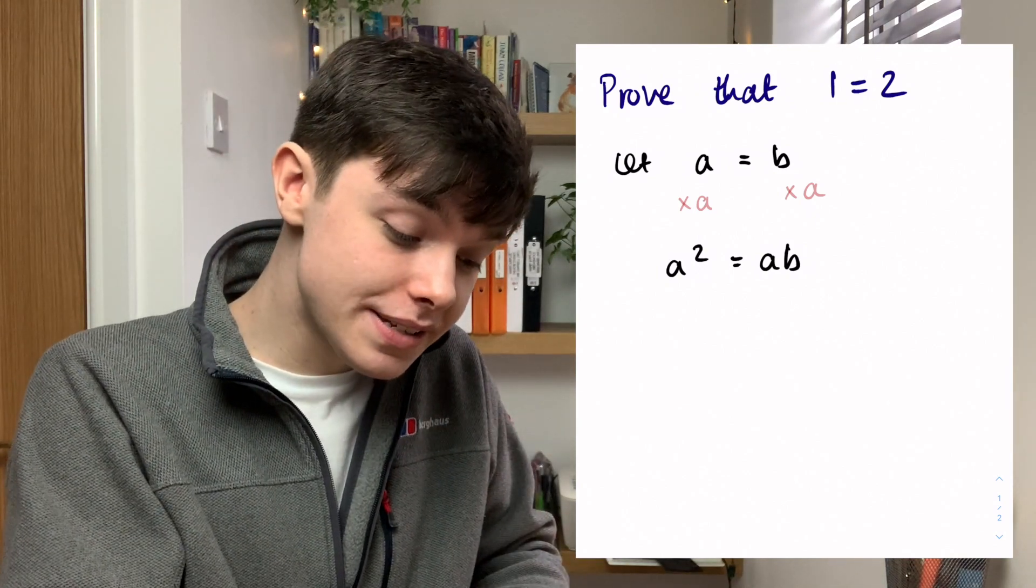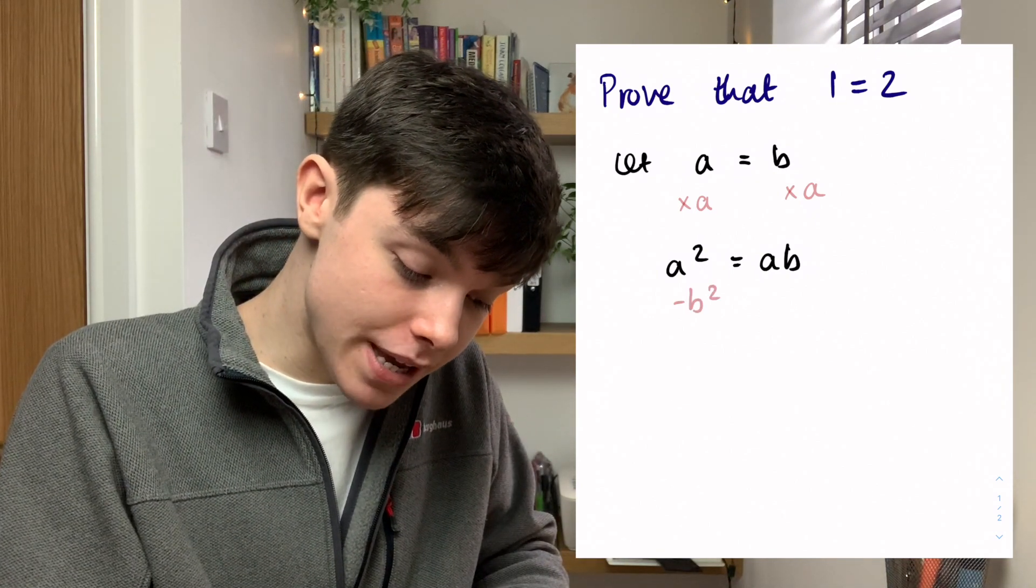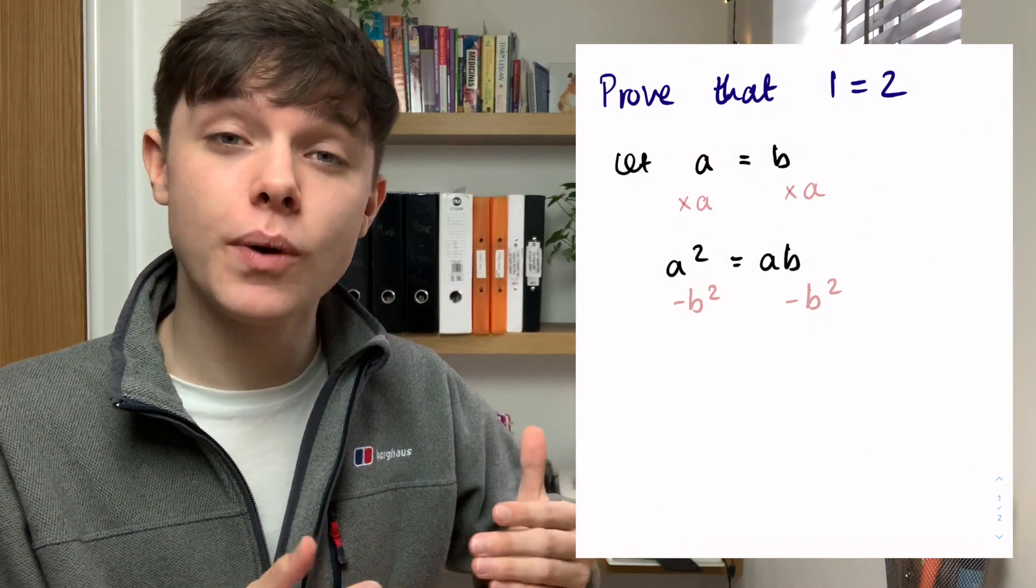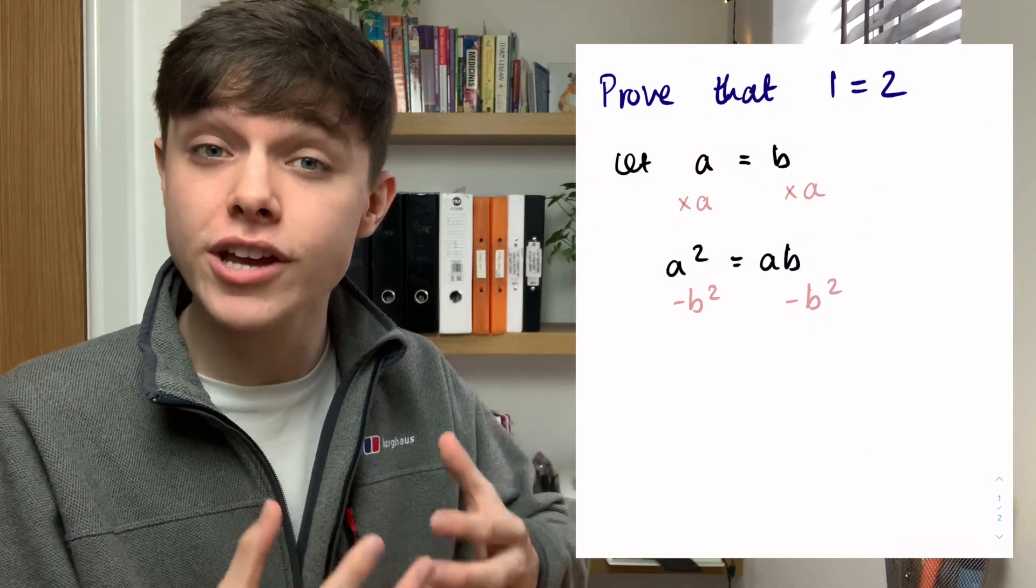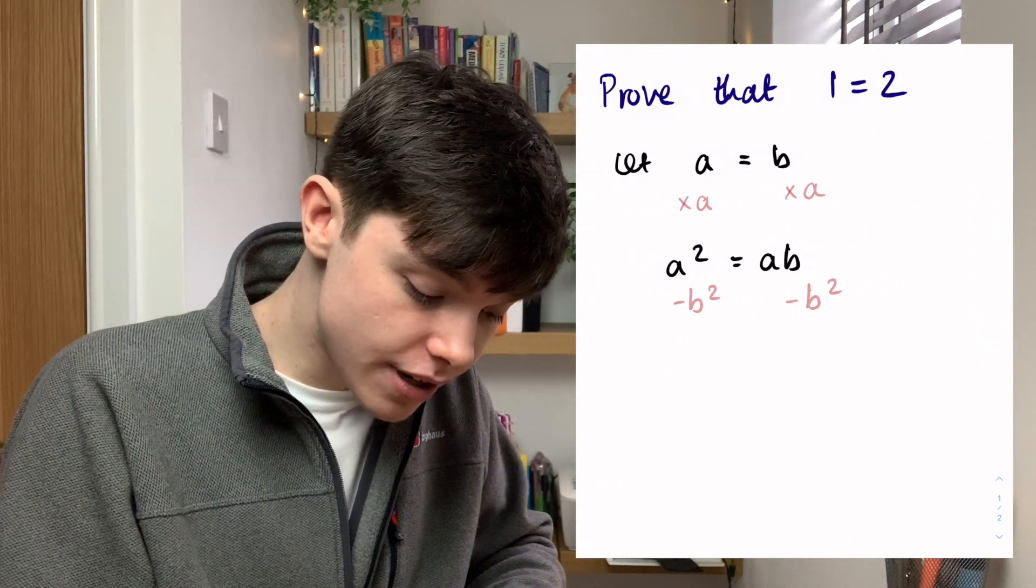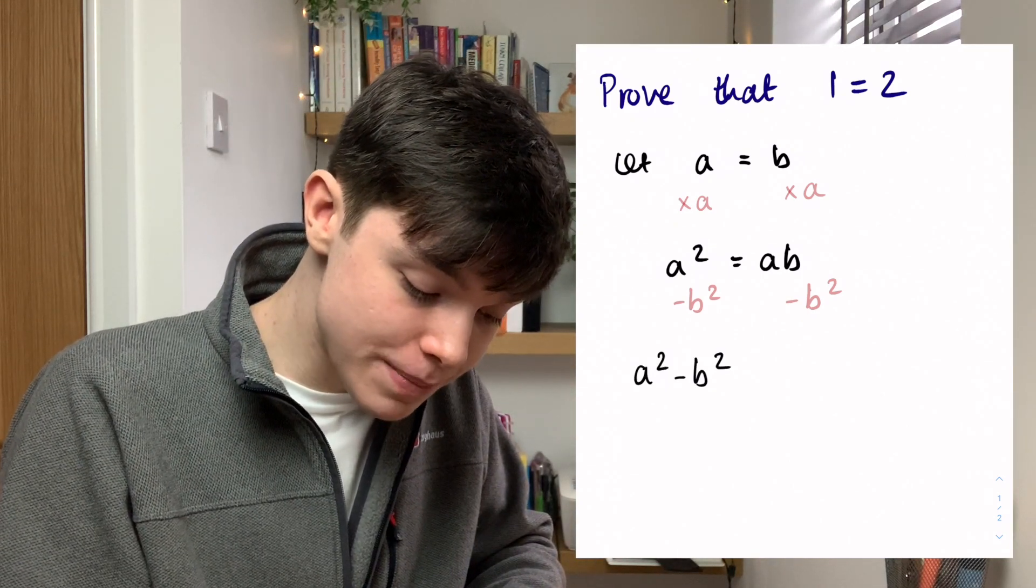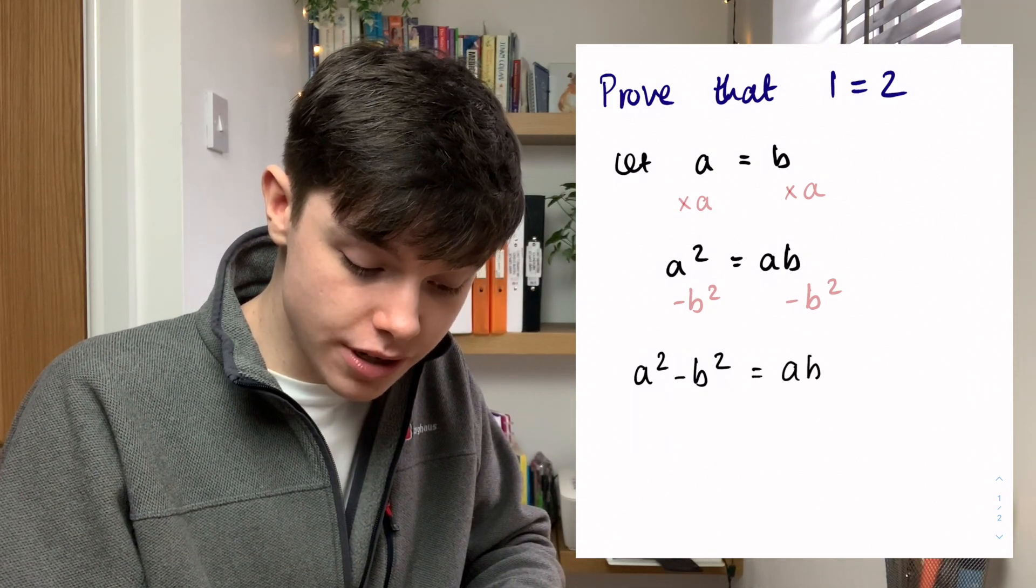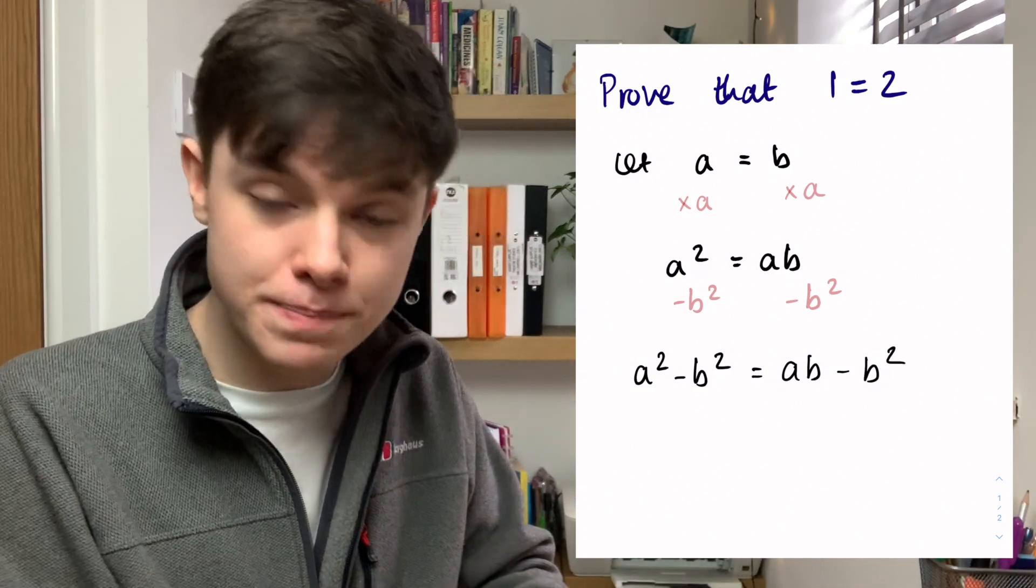Then what I'm going to do on both sides is I'm going to minus b squared. I'm allowed to do that because I'm taking b squared from both sides so the equation is still balanced. So on the left hand side we have a squared minus b squared and that equals ab minus b squared.